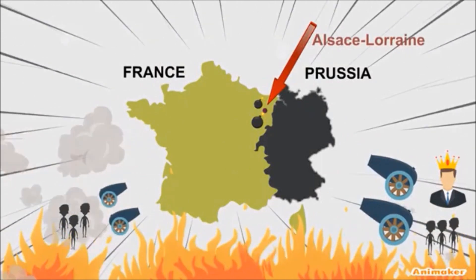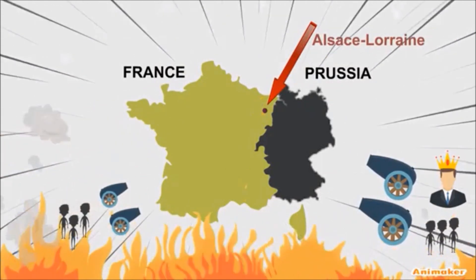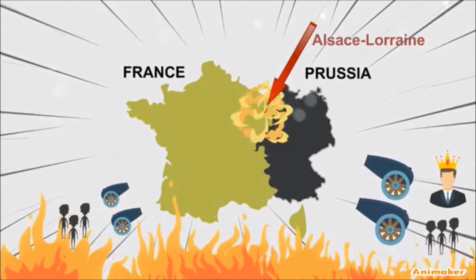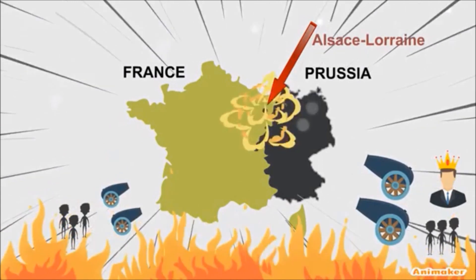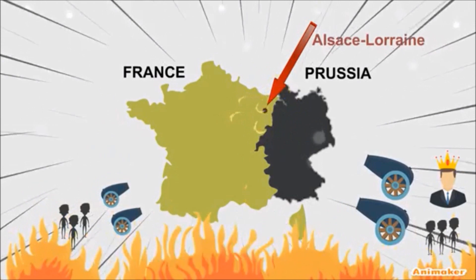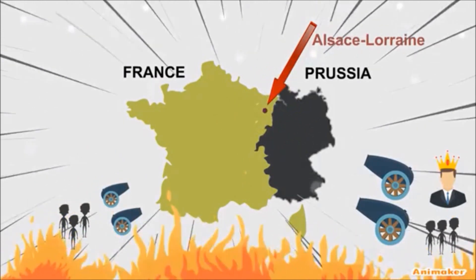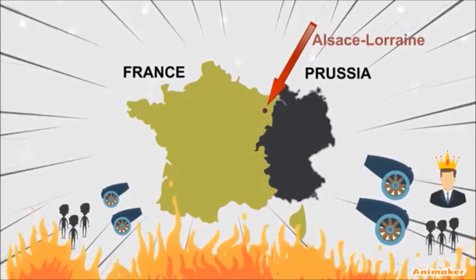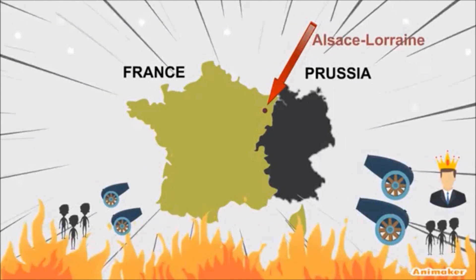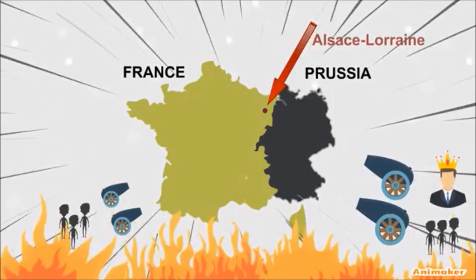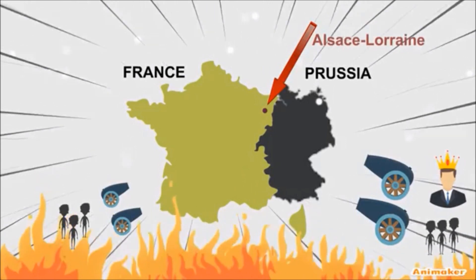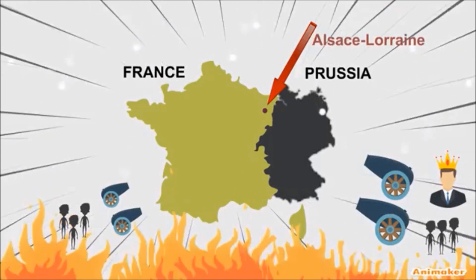The French and the Prussians have fought over this territory many times in history. This story arises at that place following one of the many savage wars that occurred. In 1870, the Prussian army under Bismarck attacked and captured parts of Alsace and Lorraine.